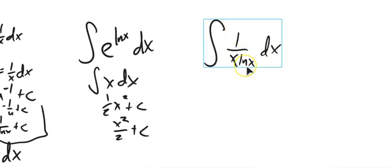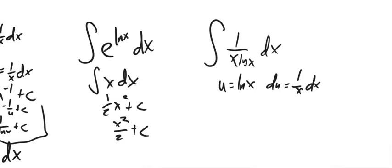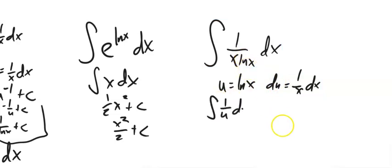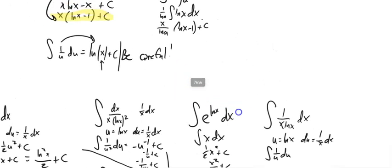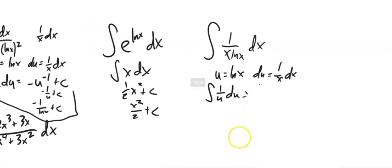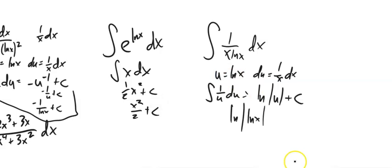The integral of 1 over (x times ln x): let u equal ln(x), so du = (1/x)dx. The 1/x dx part becomes du, leaving the integral of 1/u, which is u to the negative 1. The integral of 1/u is natural log, so this gives natural log of u plus C. Substituting back, we get ln(ln x) plus C — which made me giggle for some reason.